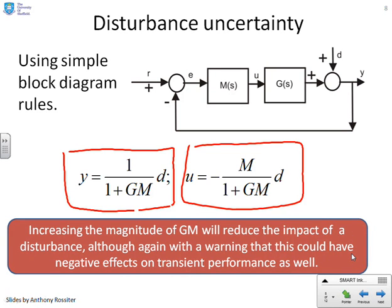And the same observation comes as it did with parameter uncertainty. If you increase the magnitude of GM, then 1 plus GM is getting bigger. And clearly, therefore, you would expect these transferences to get smaller. It might not be quite so clear cut with the U because you've got an M over 1 plus GM. But definitely for the Y, for the output, you can see that increasing M in general will cause the Y to get smaller.